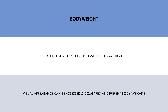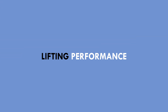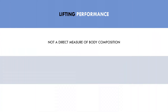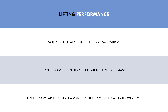Another method of assessing body composition is lifting performance. While this is not a direct measure of body composition, it can help us gauge muscle mass. Because muscle is a strong contributor to strength, we can look at trends in performance to assess how much muscle we have. If we are lifting with the same strict technique and performance in the 6–20 rep range is improving over time, then this is a good general gauge that we are growing muscle. Performance can also be compared to previous lifting performance at the same body weight for long-term assessment.